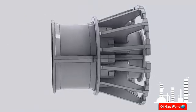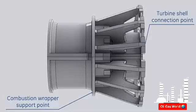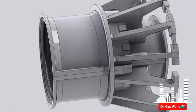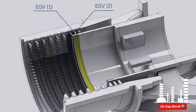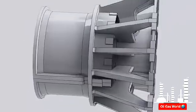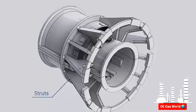The discharge casing is the final portion of the compressor casings and the largest single casting. It is the keystone of the gas turbine structure, connecting the compressor to the turbine section and supporting the combustion system. The discharge casing contains the last seven stages of compressor vanes and two rows of exit guide vanes. It consists of outer and inner cylinders connected by 12 struts, which flare out to meet the large diameter of the turbine shell while providing spacing for transition pieces in between.